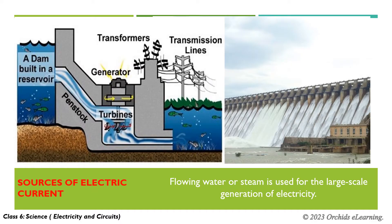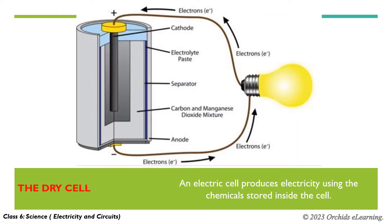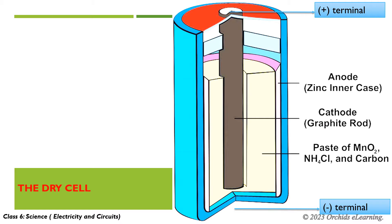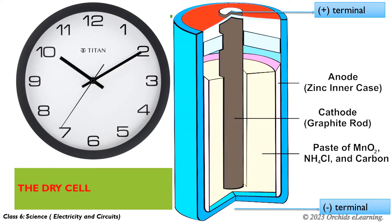Flowing water or steam is used for the large scale generation of electricity. An electric cell produces electricity using the chemicals stored inside the cell. Each cell has two terminals — positive and negative — and the cell is marked with plus and minus to indicate these terminals. Common uses of these types of cells include torch, remote, clock, etc.